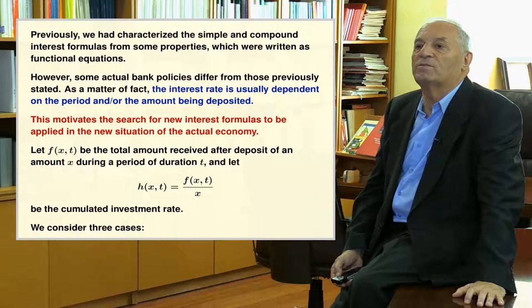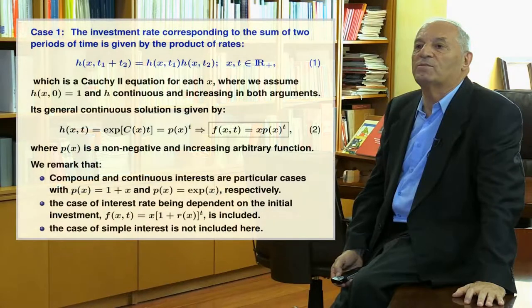Let f(x, t) be the total amount received after deposit of an amount x during a period of duration t, and let h be the cumulative tax rate as indicated by the formula in the slide. We consider three cases. Case 1: the tax rate corresponding to the sum of two periods of time is given by the product of the tax rates associated with each period, as indicated in Formula 1, which is a Cauchy-2 equation for each x, where we assume that h(x, 0) = 1 and h is continuous and increasing in both arguments.